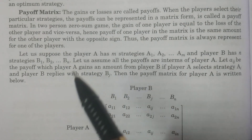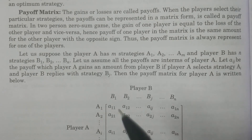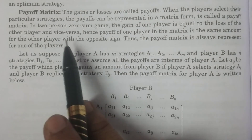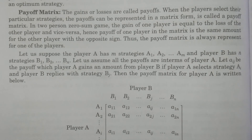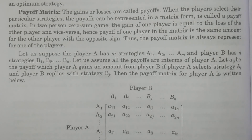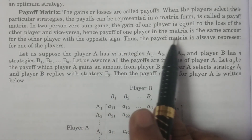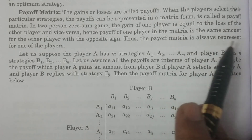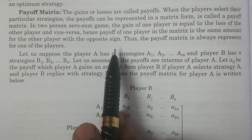The gain of one player is equal to the loss of the other player, and vice versa. Similarly, loss is equal to the other player's gain. If it is represented as a matrix, it is a payoff matrix. Hence, the payoff of one player in the matrix is the same amount for the other player with the opposite sign.